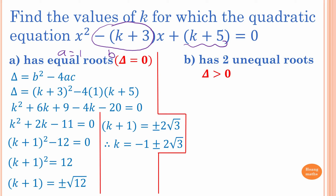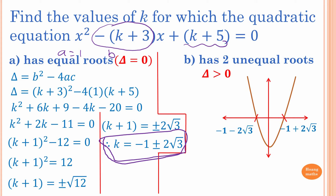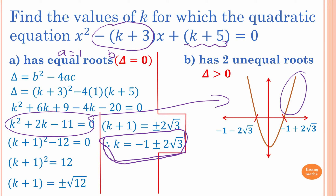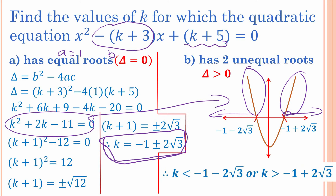Since we already found the discriminant equals (k+1)² minus 12, and the equal-roots solutions are k = minus 1 ± 2√3, we sketch the discriminant function. We want it positive, meaning k values outside the roots. Therefore k is less than minus 1 minus 2√3, or k is greater than minus 1 plus 2√3.